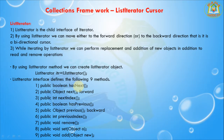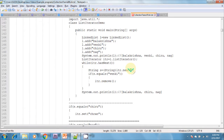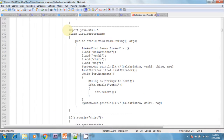The ListIterator has nine methods. Methods 1–3: hasNext(), next(), and nextIndex() — used to navigate in the forward direction. Methods 4–6: hasPrevious(), previous(), and previousIndex() — used to navigate in the backward direction. The remaining methods are used to remove(), set(), and add() elements in the ListIterator.